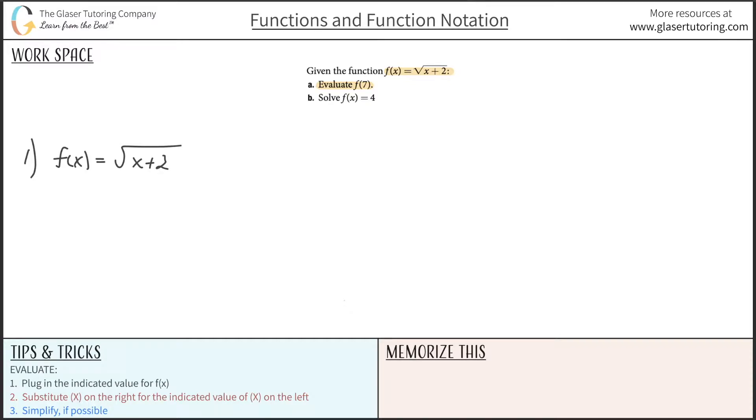Now, since we're looking to evaluate the function at a particular x value, our first step is basically just to substitute or plug in this indicated f of x for the f of x in our function. So instead of writing f of x over here, I'm now going to write f of 7. And that shall now equal radical.